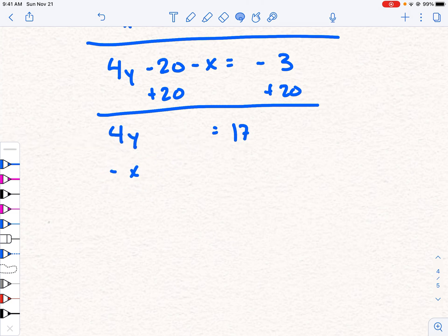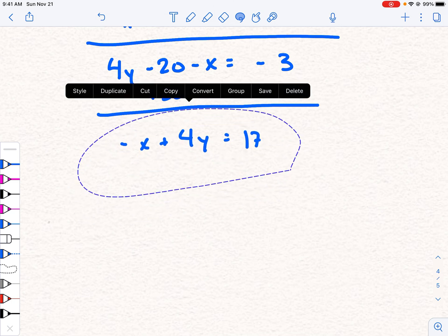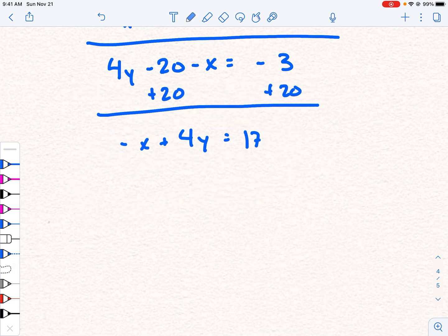I'm going to move the minus x to the front. I'm going to move the positive 4y second. And I'm going to bring this minus 17 down. I do like the x and the y to be in order. And now I'm going to go ahead and do a simple step. I'm going to multiply the entire thing by negative 1.